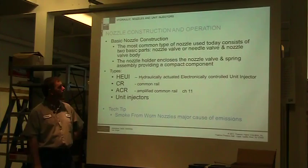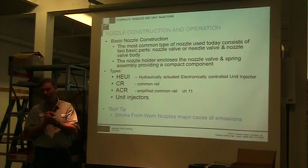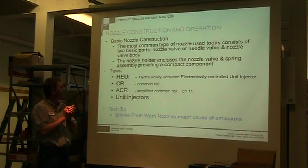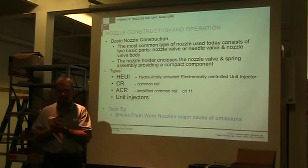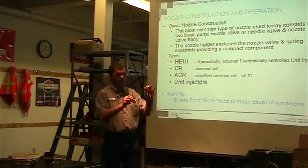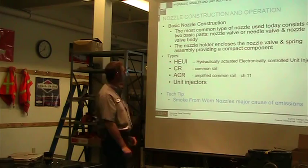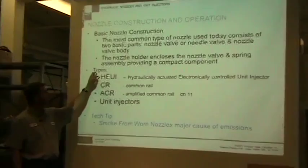Basic construction: the most common type of nozzle used today consists of two pieces — the needle valve and the nozzle body itself. Most of what we have are unitized pieces; we can remove them and put them back in. The nozzle holder encloses the nozzle valve and spring assembly, providing a compact component — just a small little piece is all. This is my injector.